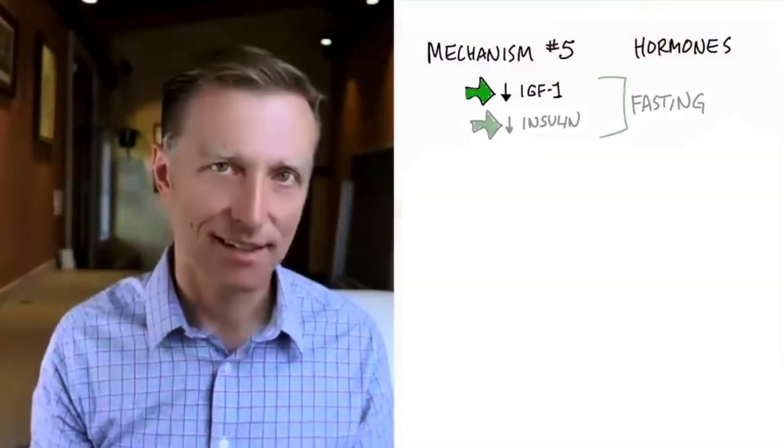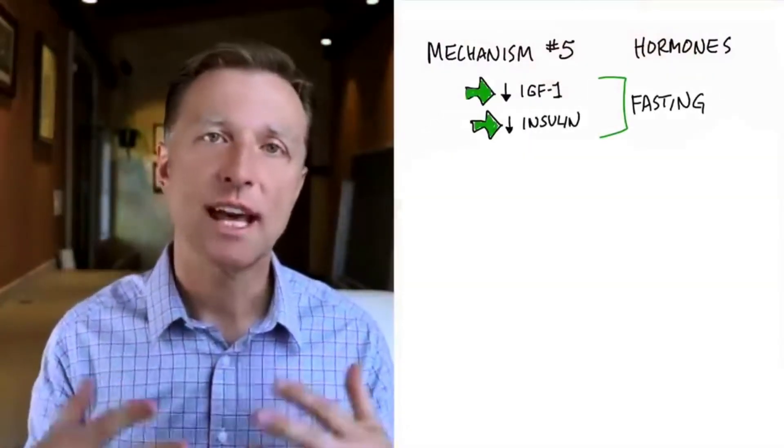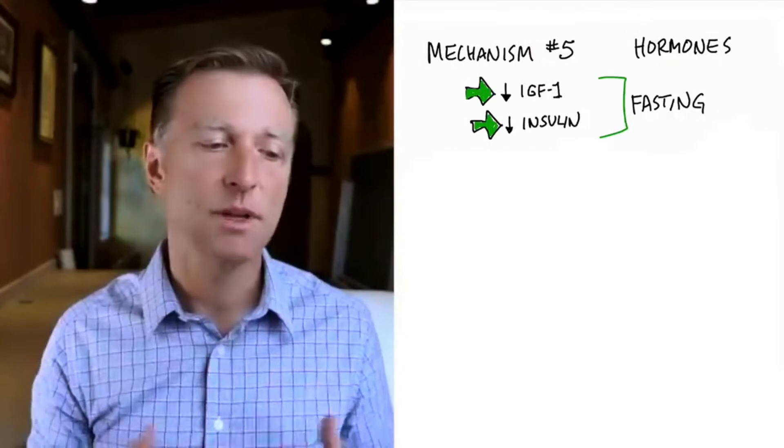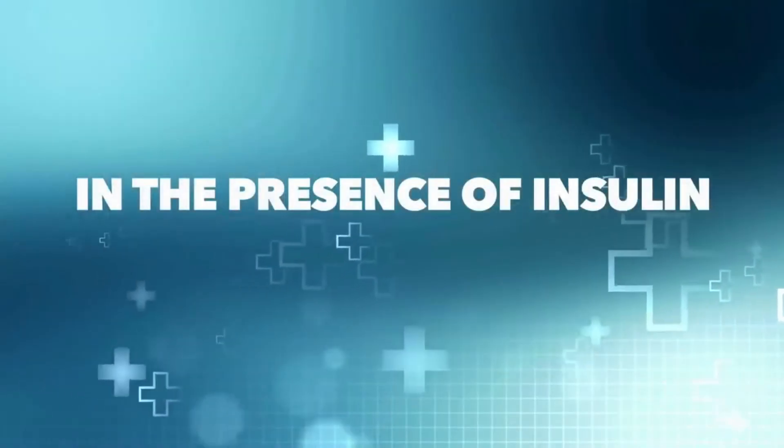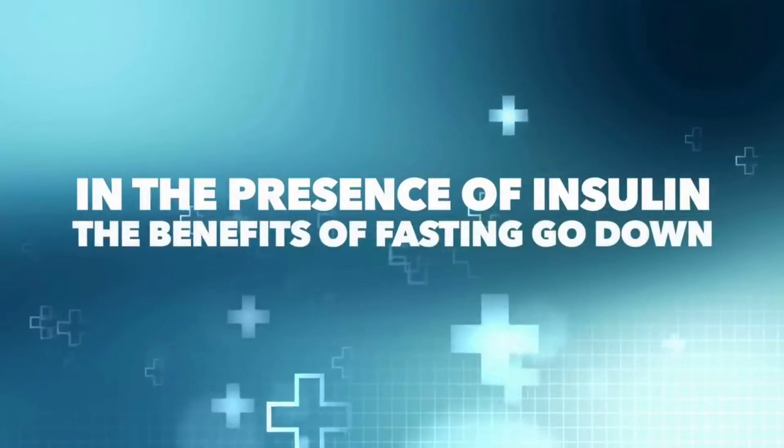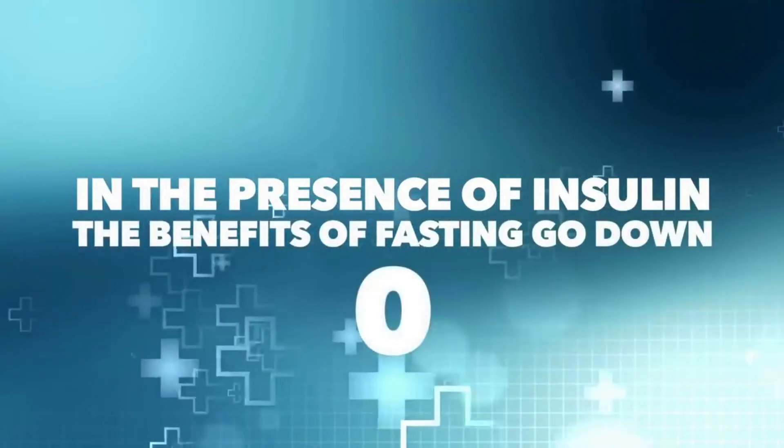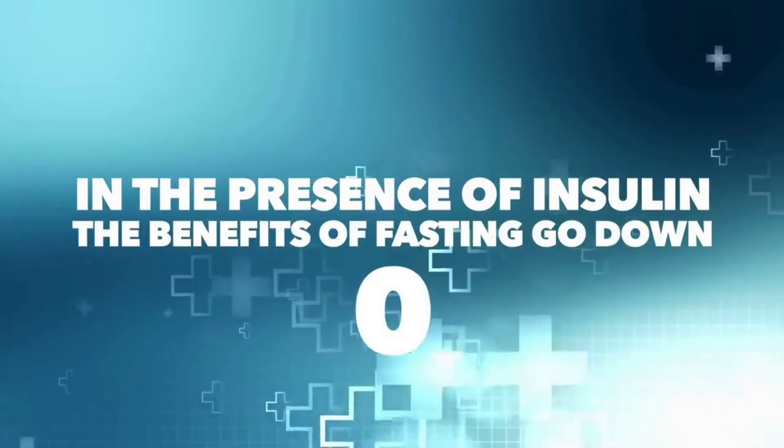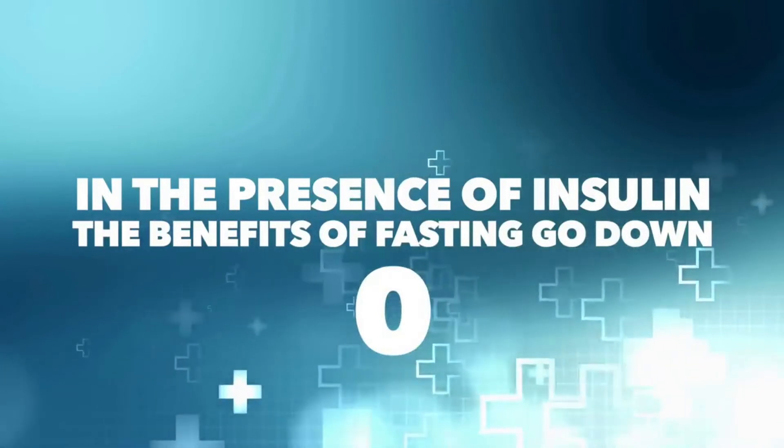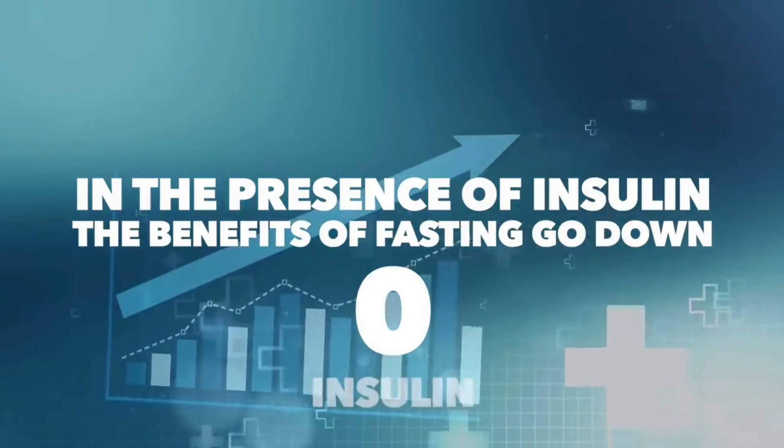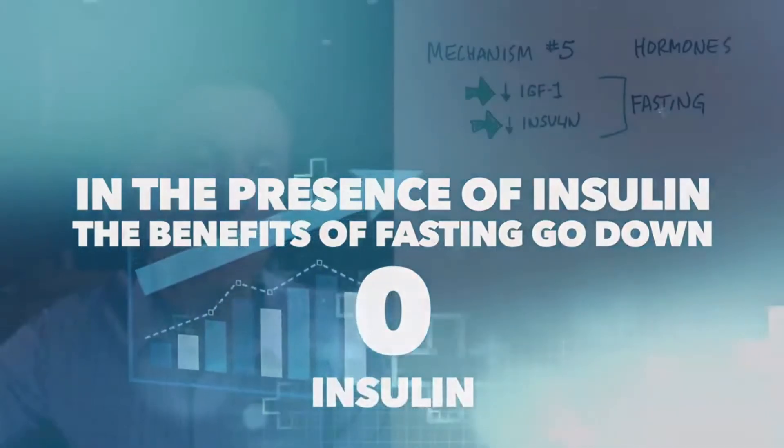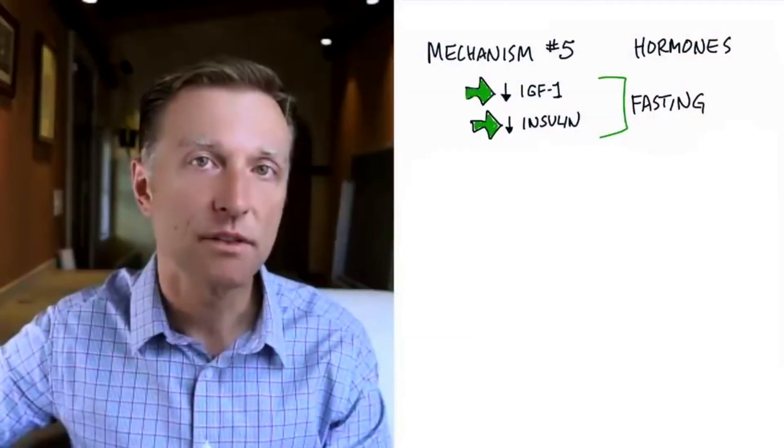The next hormone, insulin. Insulin is also an anabolic hormone. Insulin has been known to increase the risk of getting cancer. And in the presence of insulin, the benefits from fasting go way down to zero. So a lot of the benefits from fasting and autophagy occur when the insulin is low. In fact, you can't get into fasting or autophagy without first lowering insulin. So keeping insulin low is a very key thing.